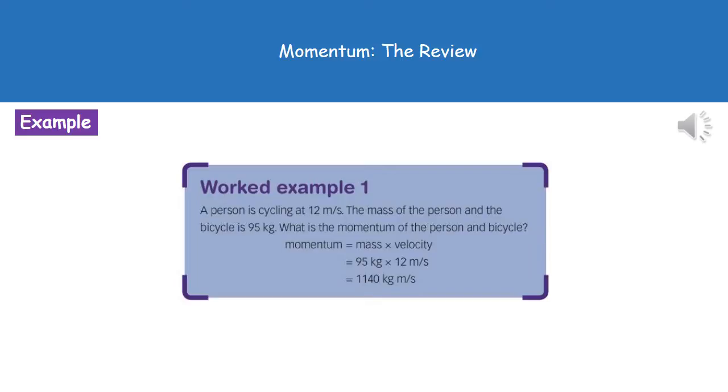To give you an example of the kind of question you might see for this then: The person is cycling at 12 meters per second, the mass of the person and the bicycle is 95 kilograms. What is the momentum of the person and bicycle? So first thing we do, is turn back to page 2 in our exam booklet, and look up our momentum formula, and write that down. So momentum is mass times velocity.